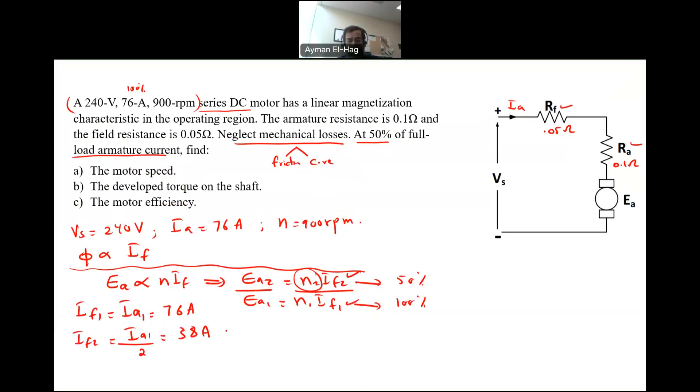I need to find Ea2 and Ea1, very straightforward. Ea2 is equal to Vs minus Ia2 or If2, it's the same current, times 0.1 plus 0.05, the armature and the field resistors, because they are in series. This is Ia2, which is equal to 38 amps, and you will find this equal to 234.3 volts. I need to find Ea1, which is Vs minus Ia1, which is 76 amps, times the same resistors, 0.05, and this equals 228.6 volts.